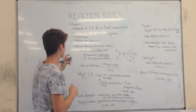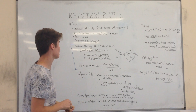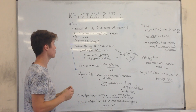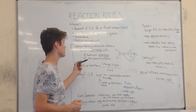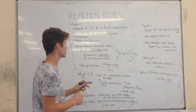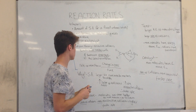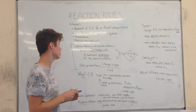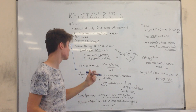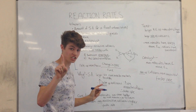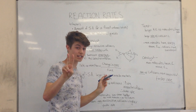Before I explain why these factors affect the rate of reaction, I'm going to explain why a reaction occurs and how it occurs. For a reaction to occur, particles must collide with sufficient energy and the correct orientation.